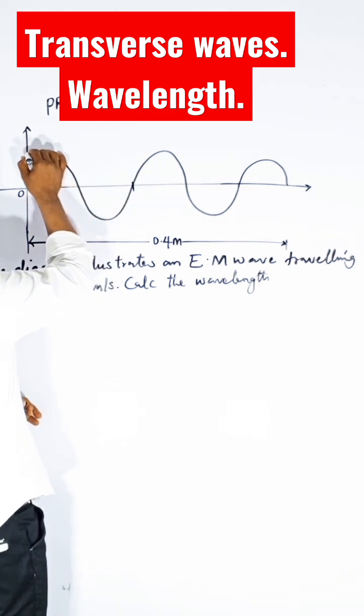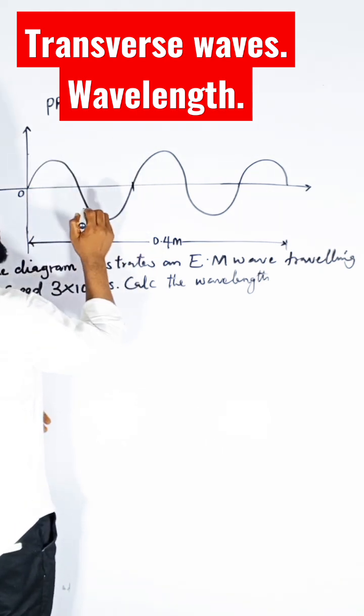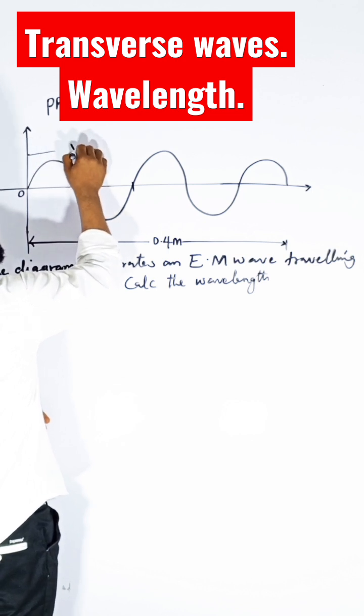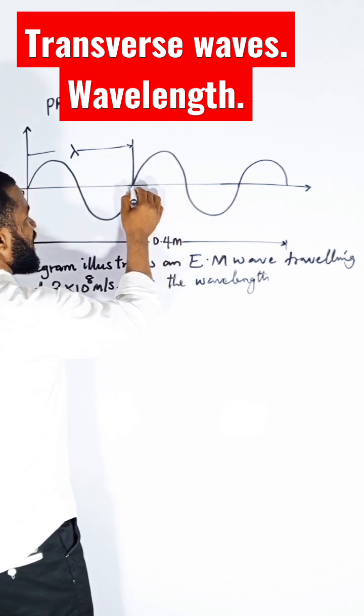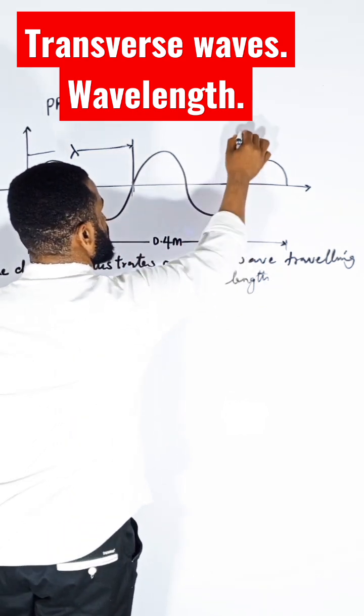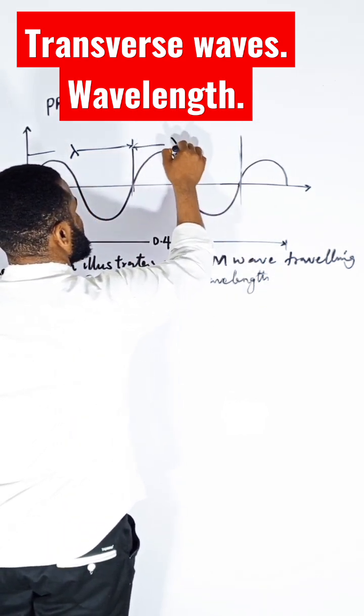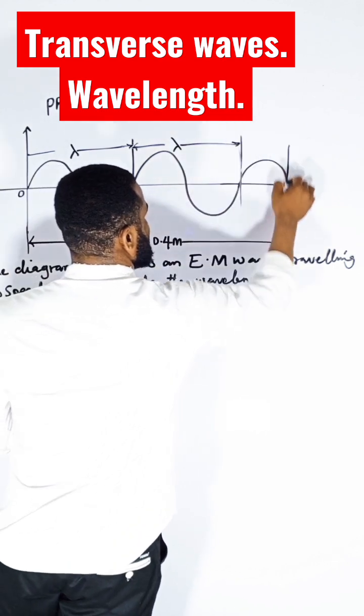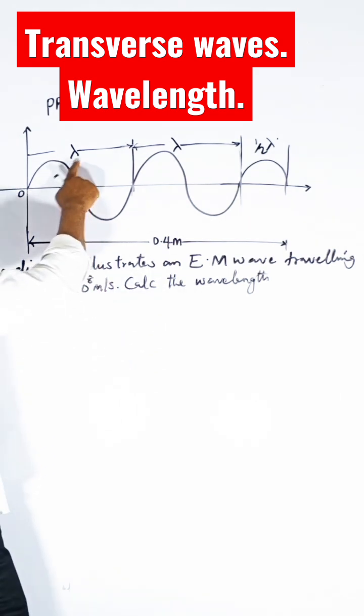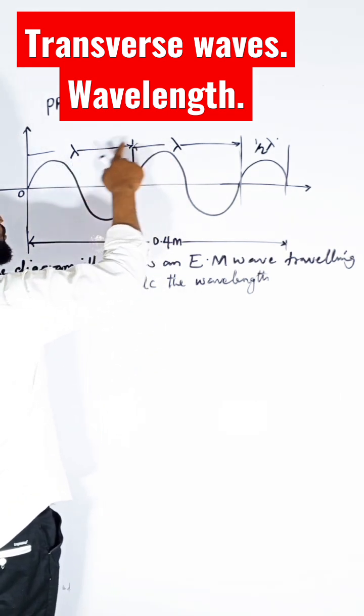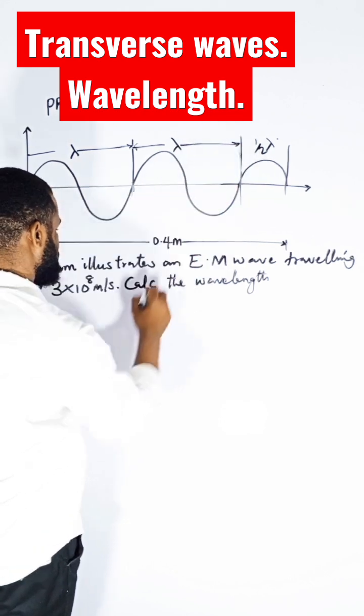So from here to here is one wavelength. This place is one wavelength, then another place is one wavelength here, then this is going to be half wavelength. So how many wavelengths? One plus one plus one plus half, which is going to be 2.5 wavelengths.